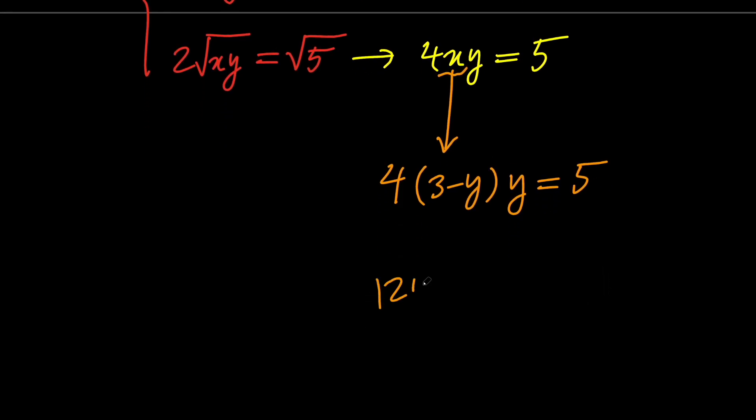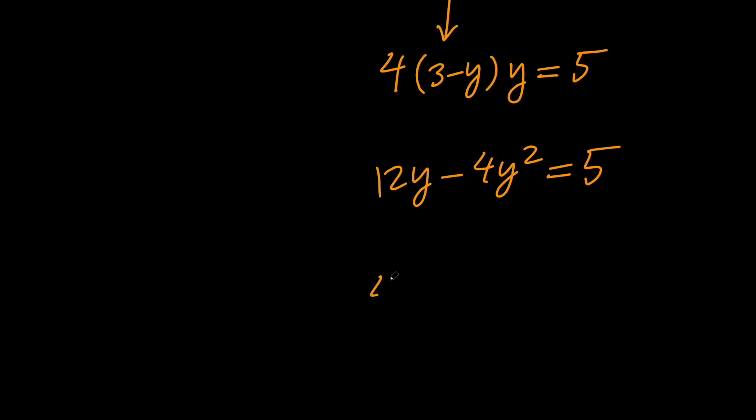So we have 12y minus 4y squared equals 5, which will give us 4y squared minus 12y plus 5 equals 0. So this is a quadratic equation, and we can use the quadratic formula in order to solve this for y.